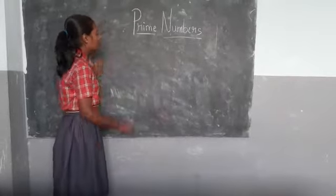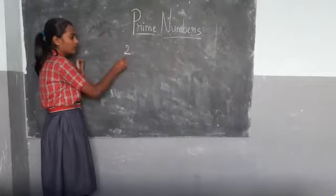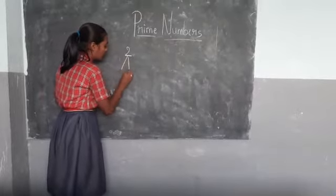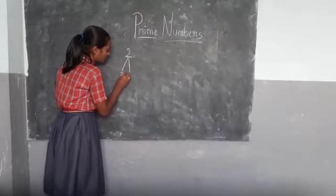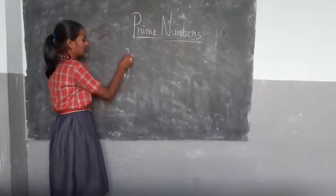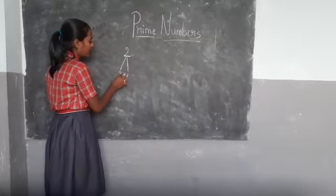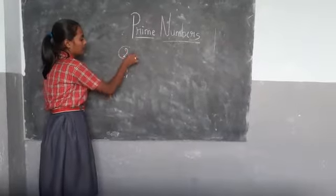Here I am taking two. Two is coming in two tables. Two ones are two. Here I wrote one and number itself came, so two is a prime number.